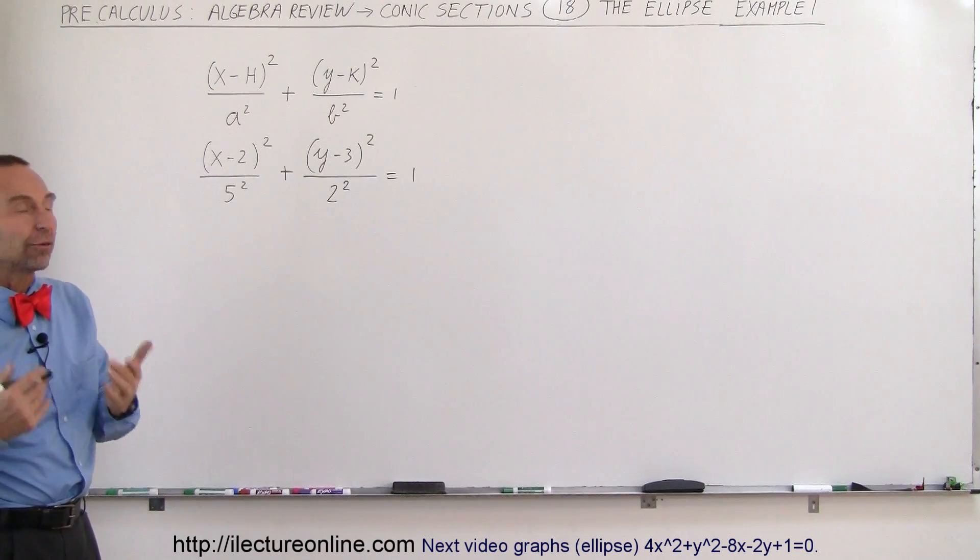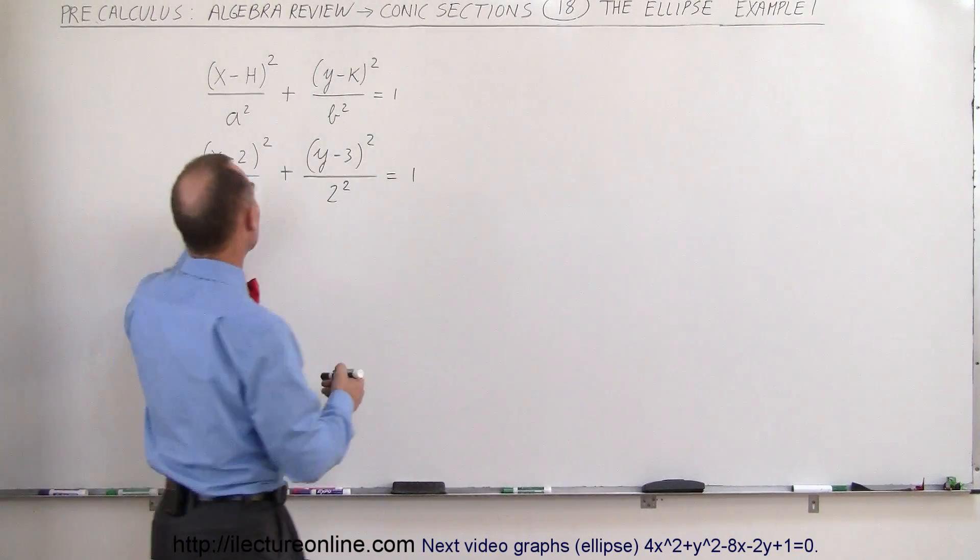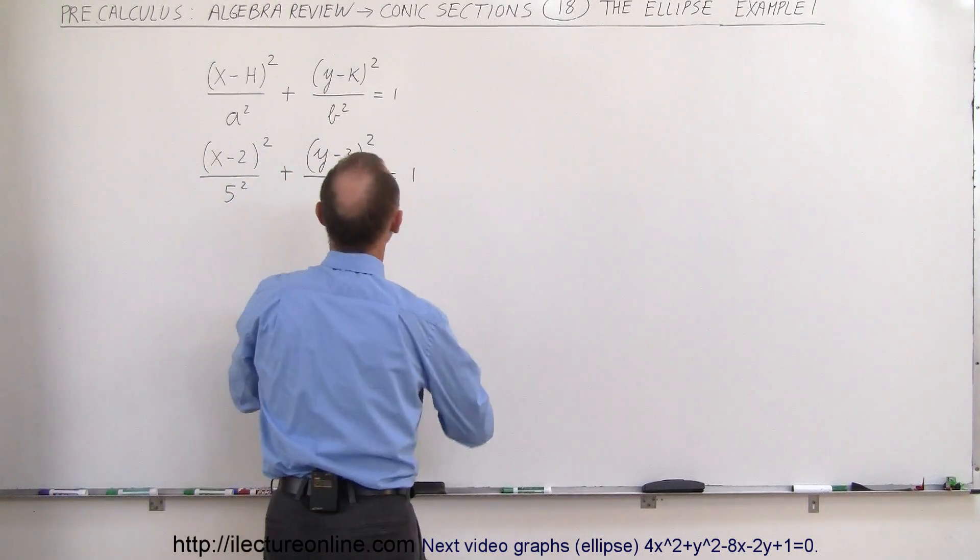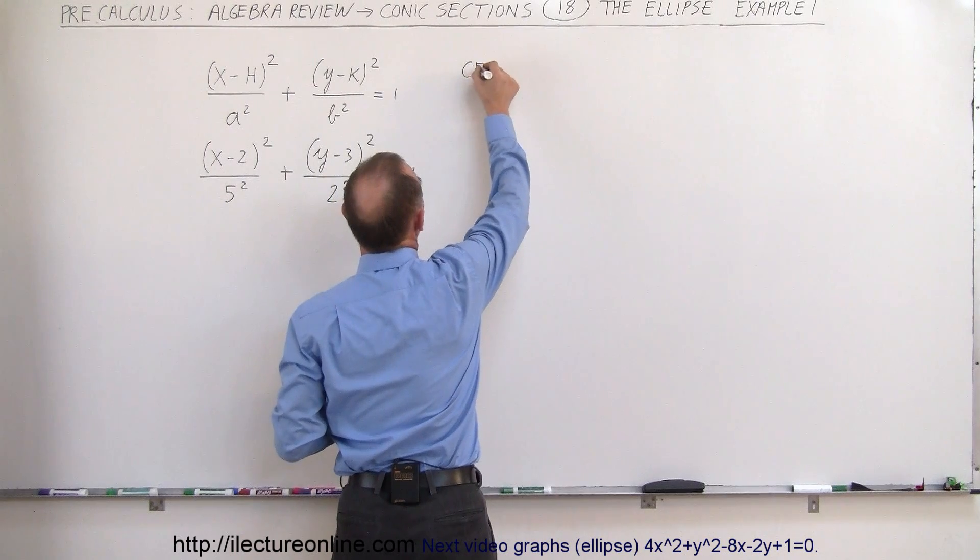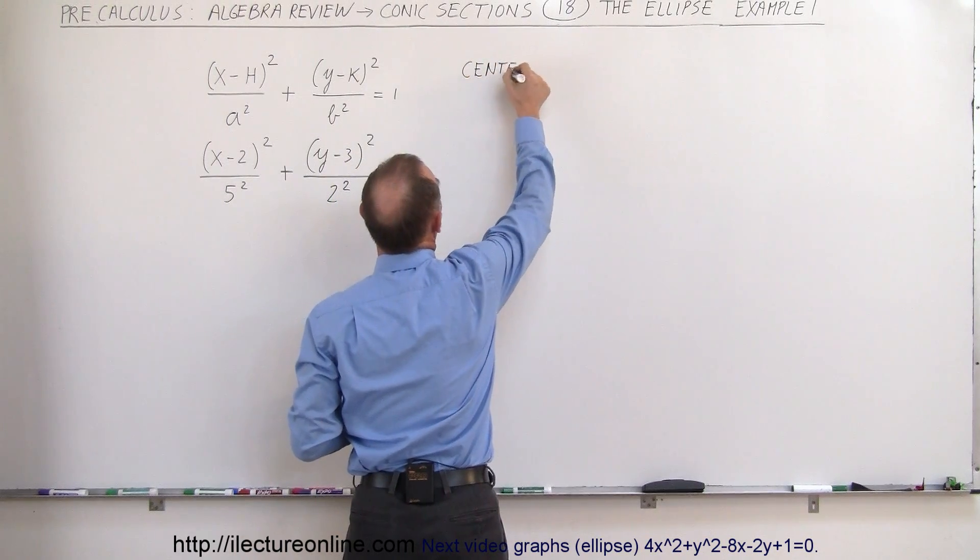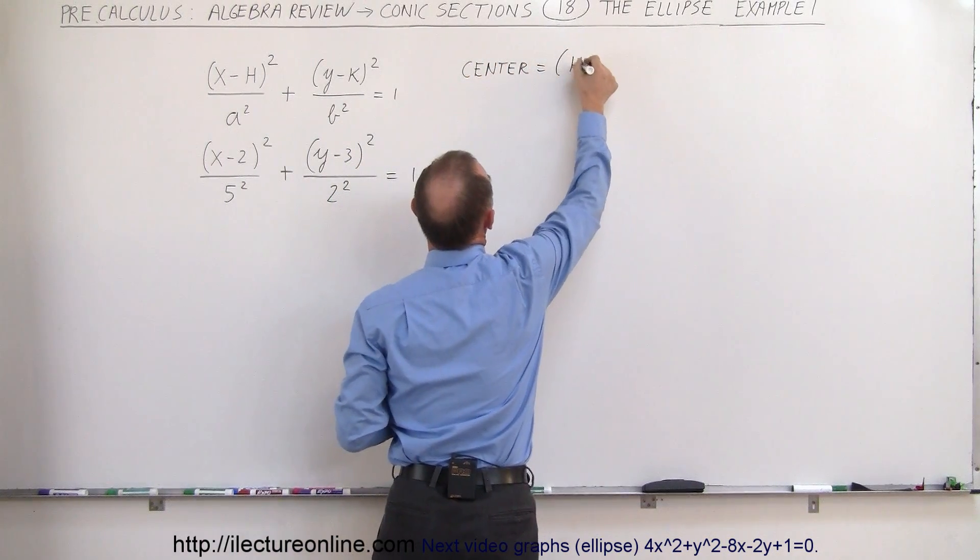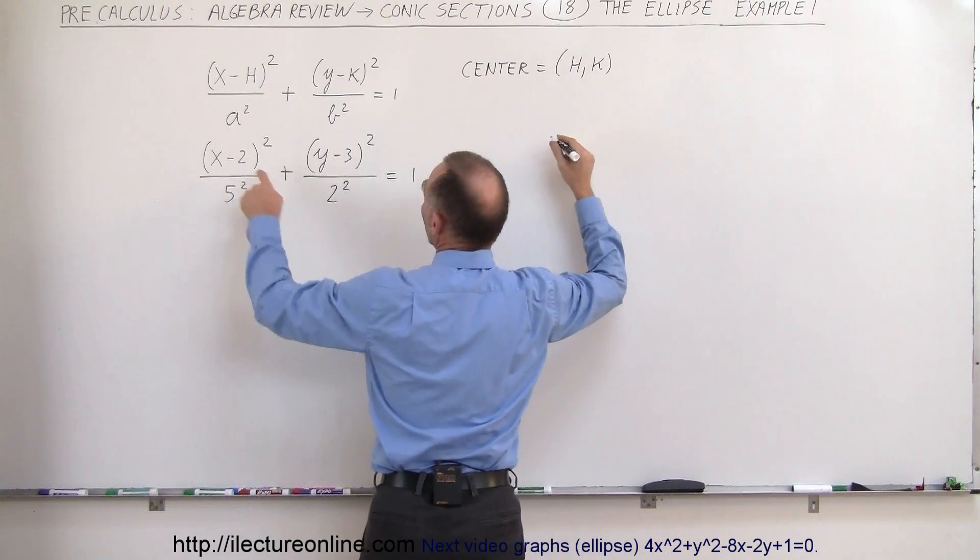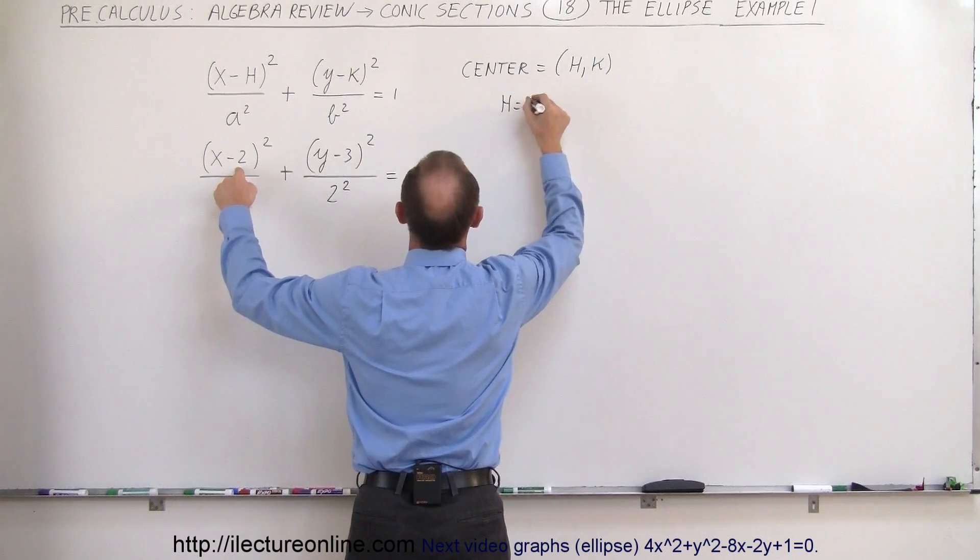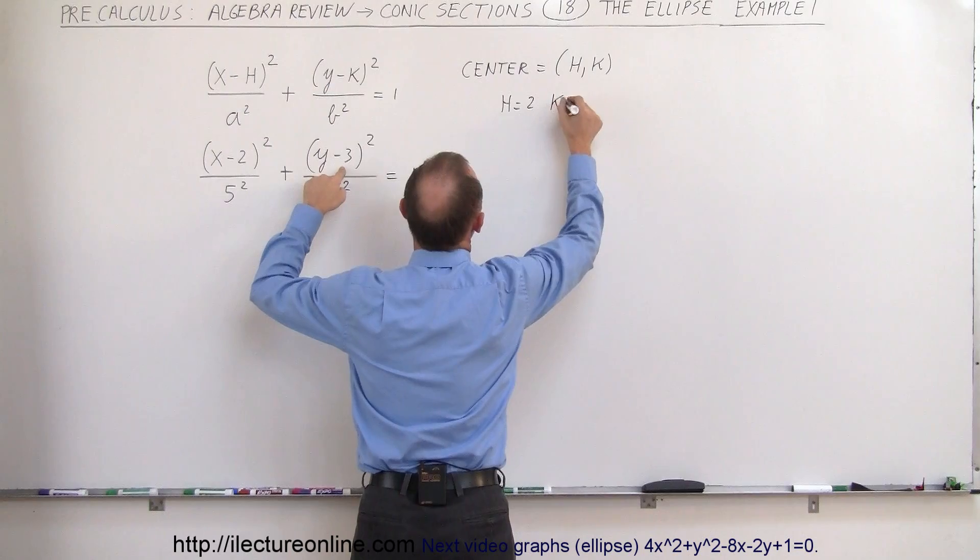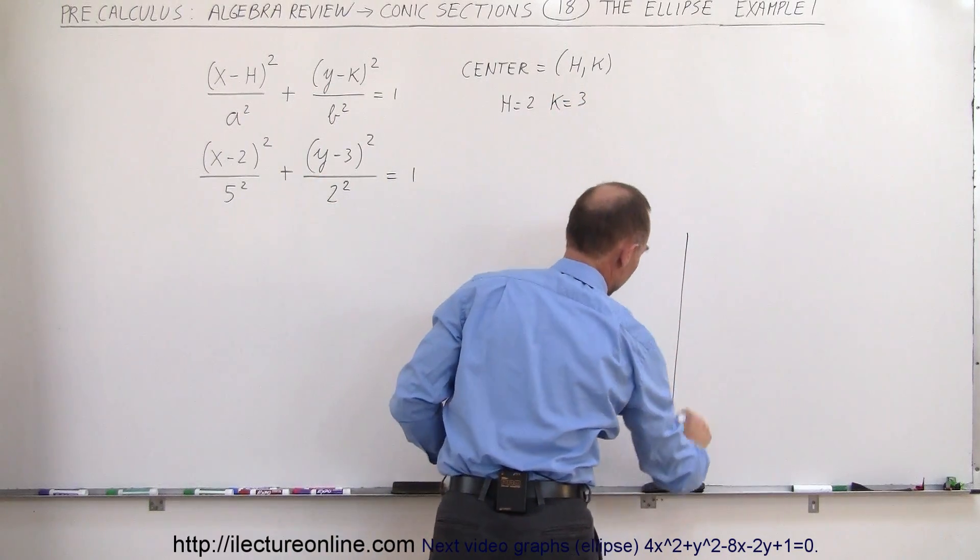First of all we want to find the center of the ellipse and the center of the ellipse is found by finding h and k. So we know that the center has coordinates h and k and in this example h would be equal to 2 and k would be equal to 3. So let's go ahead and graph it right here.